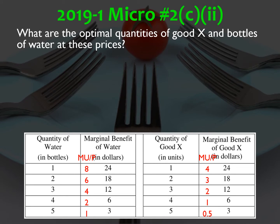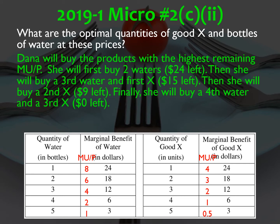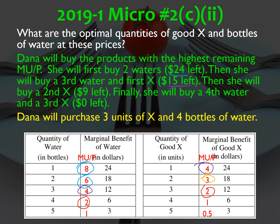Dana buys products with the highest remaining marginal utility per dollar. First she buys bottles one and two of water — ratios of eight and six — spending $6, leaving $24. Next she buys a third bottle of water and a first unit of good X, both with a marginal utility per dollar of four — that's $9, leaving $15. Then she buys a second unit of good X at a ratio of three for $6, leaving $9. Finally she buys a fourth bottle of water and a third unit of good X, both with a ratio of two. So Dana's optimal purchase is three units of good X and four bottles of water.